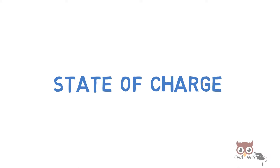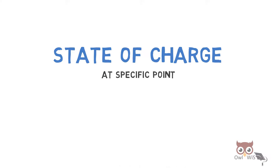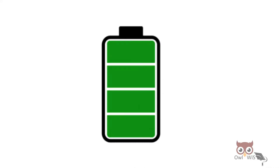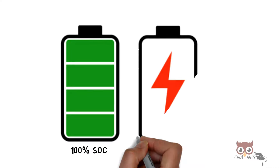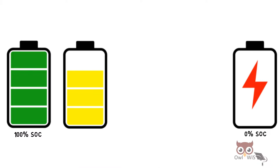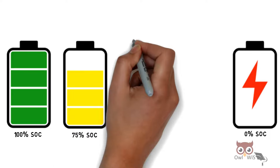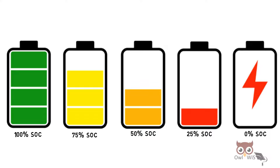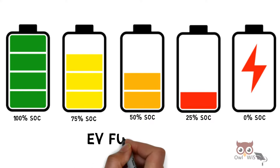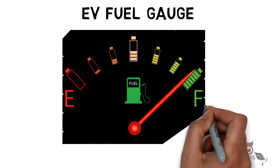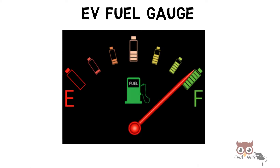State of charge of a battery at a specific point is the ratio of charge available at that point to the total charge available when fully charged. It is represented in the form of percent, such as 100% SOC, 0% SOC, 75% SOC, or 50% SOC. SOC basically represents the level of charge, so we can use it in the form of an EV fuel gauge, which represents the amount of fuel remaining in the form of battery charge.